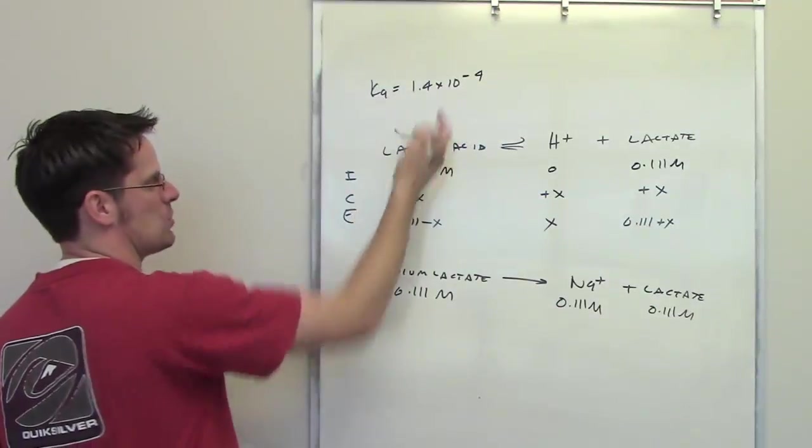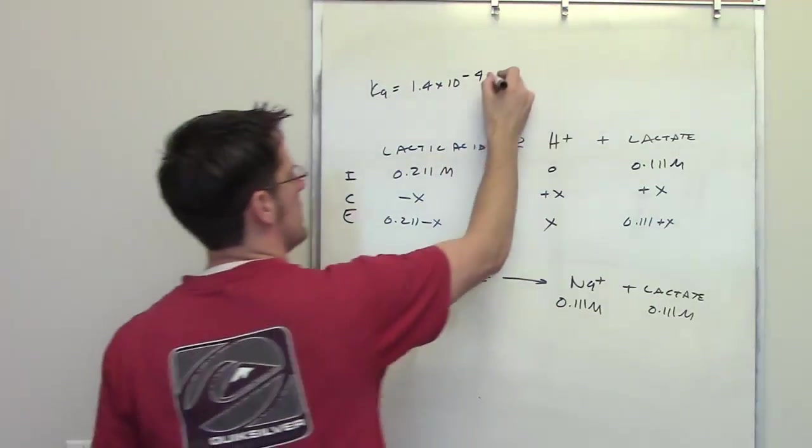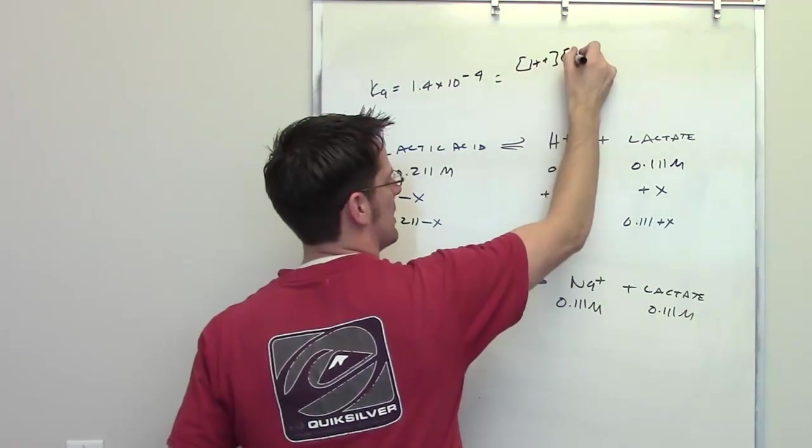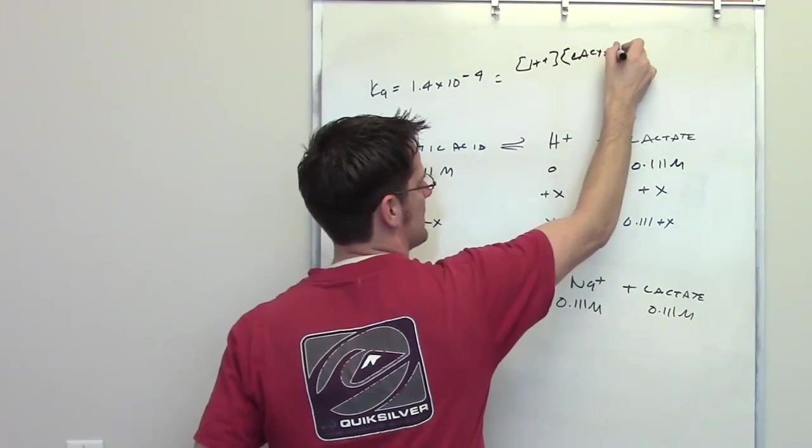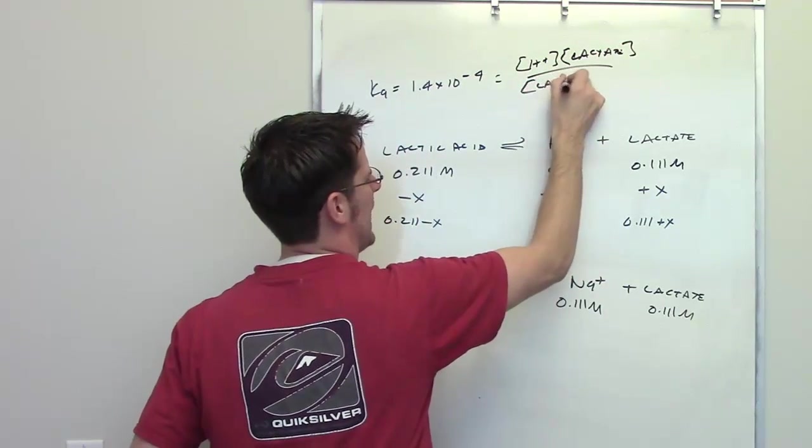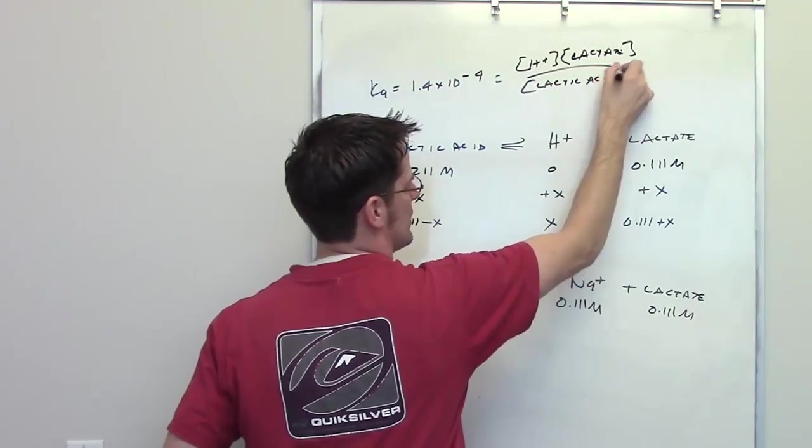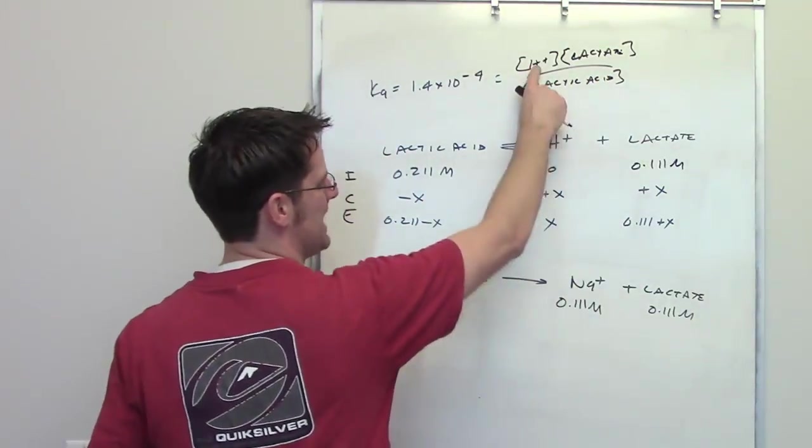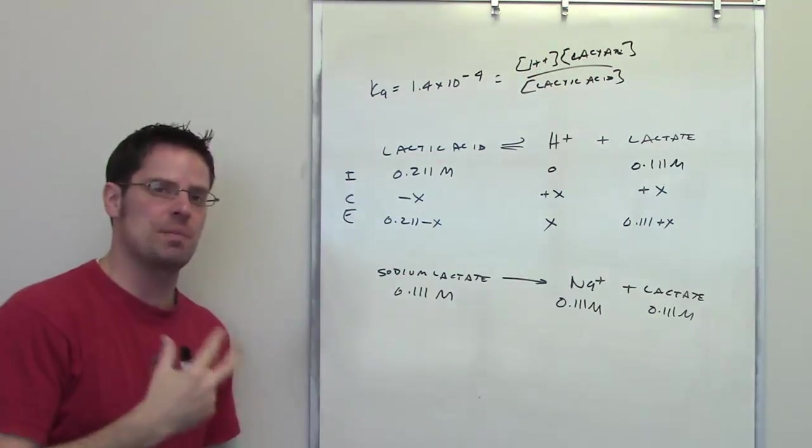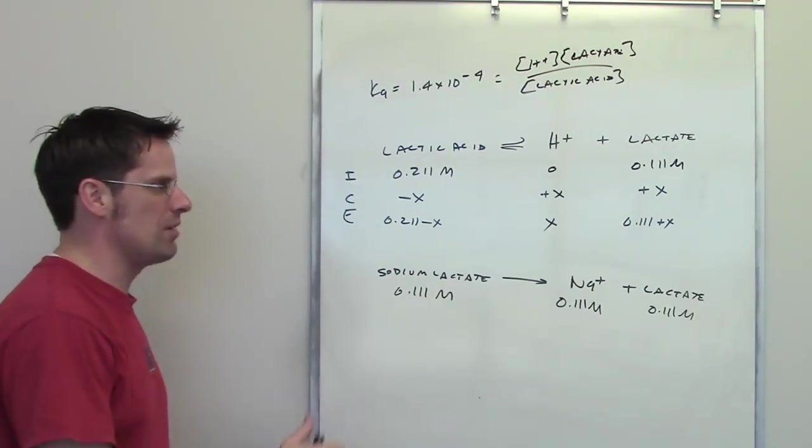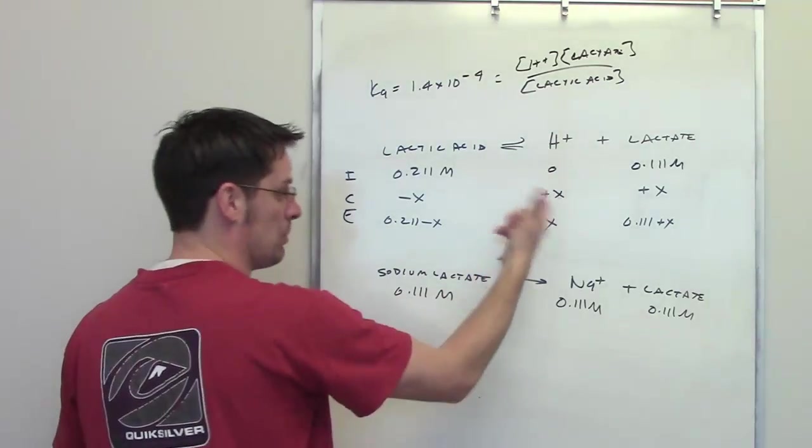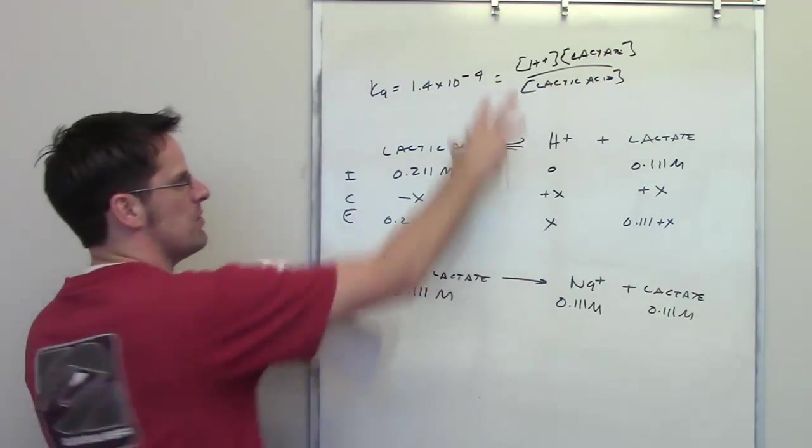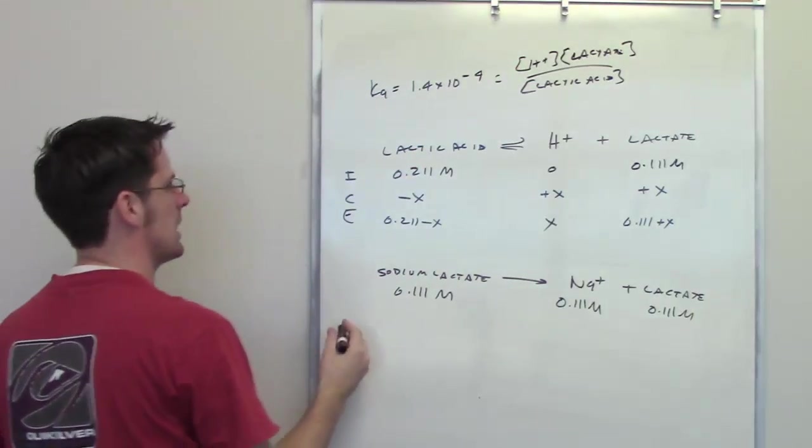Now, we've been told that our Ka is 1.4 times 10 to the negative 4th. The Ka expression is going to be the concentration of H+, multiplied by the concentration of lactate, divided by the concentration of lactic acid for this lactic acid system. All I have to do then is take each of these values and plug them in to their respective locations up here in this expression, and then solve for X. When I have X, that will be the equilibrium concentration of H+, and I can determine my pH from there. I'm going to move this information down here to give us more room.